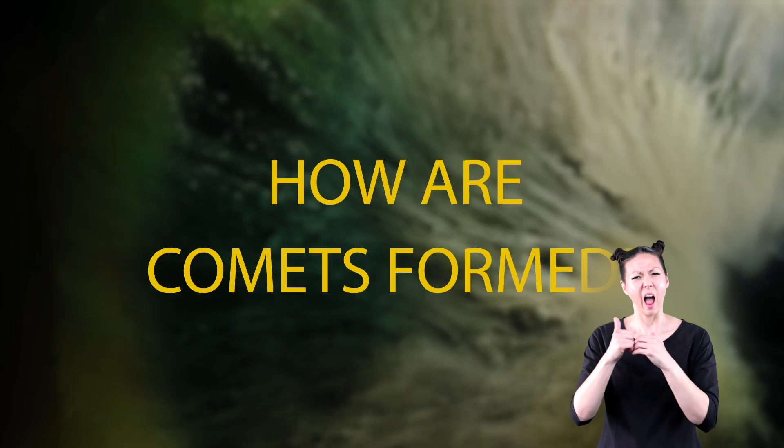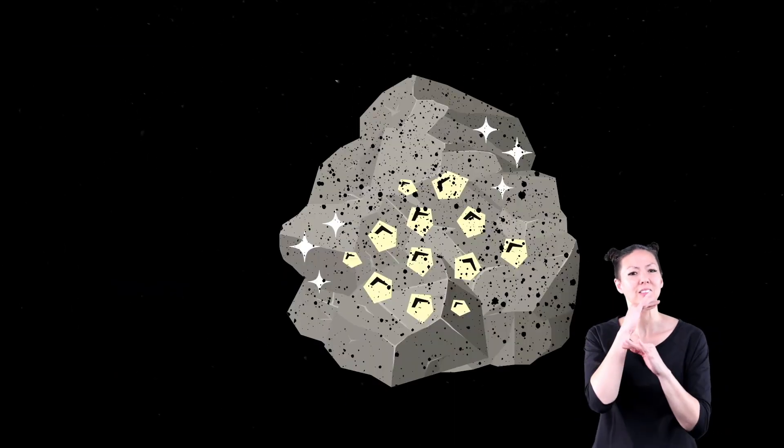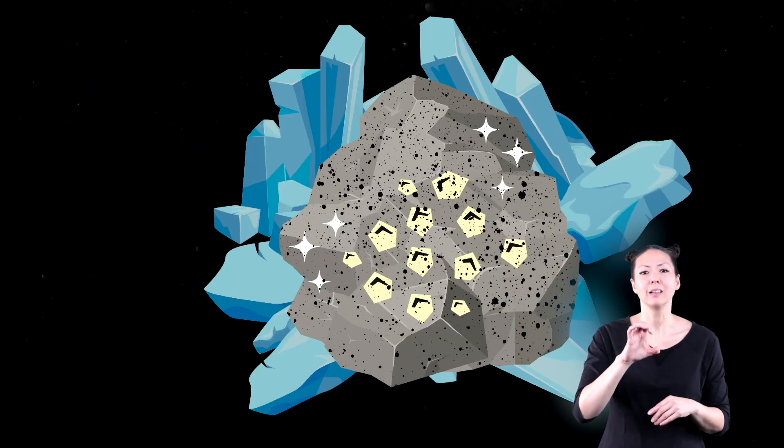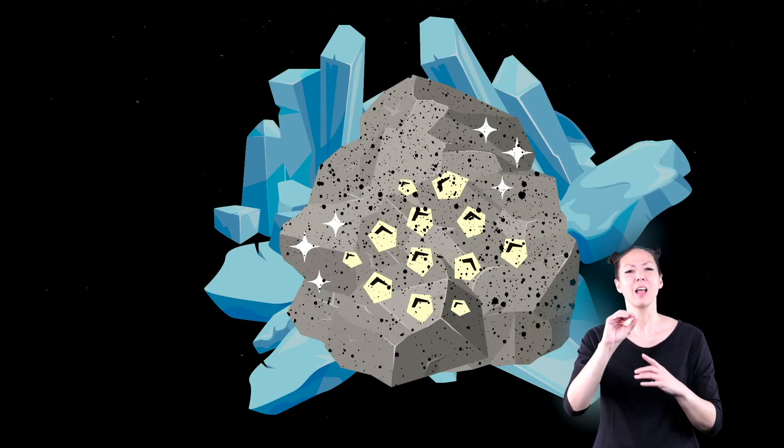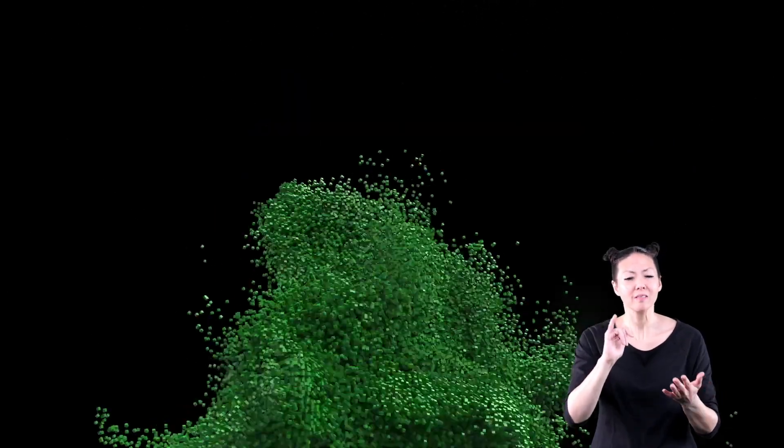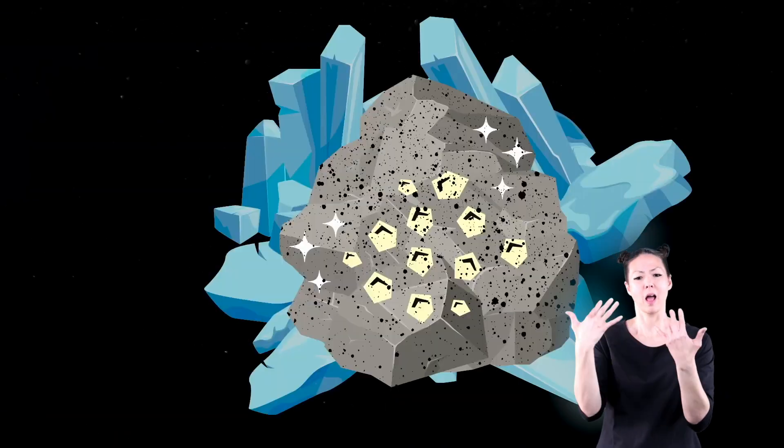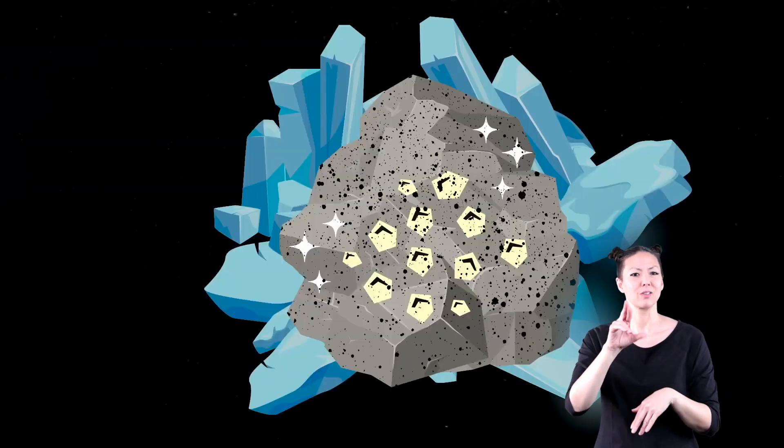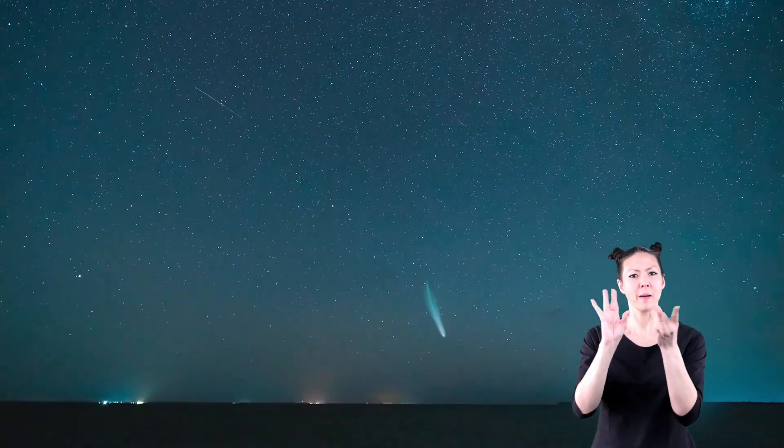How are comets formed? Particles of dust coated with water, ice and other molecules are the beginning of a comet. When the dust particles combine, it's kind of like Legos that keep getting stacked on top of each other. Eventually, the combined dust particles form icy rocks. Gravity then pulls those icy rocks together and you get a comet.